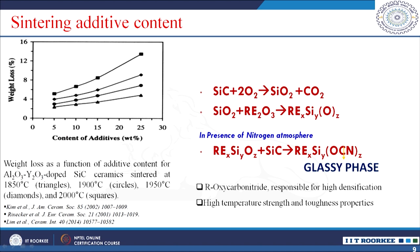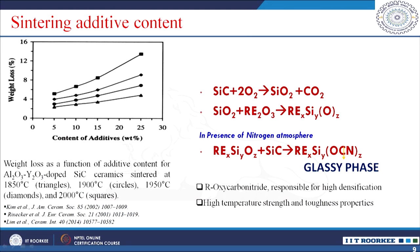Generally, silicon carbide particles have surfaces rich in silicon oxide. The silicon oxide reacts with the rare earth oxide from the additive system at high temperatures, forming a rare earth silicon oxide. In the presence of a nitrogen atmosphere, this rare earth silicon oxide with silicon carbide converts to a glassy rare earth silicon oxycarbonitride. This oxycarbonitride is responsible for improved densification in liquid phase sintering of the ceramics, resulting in high temperature strength and improved toughness.